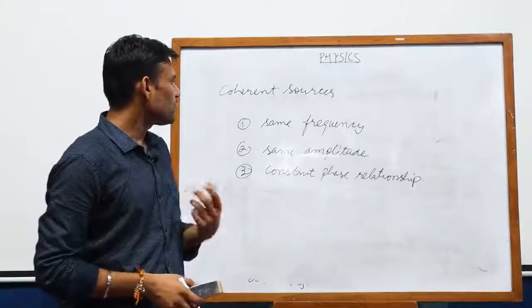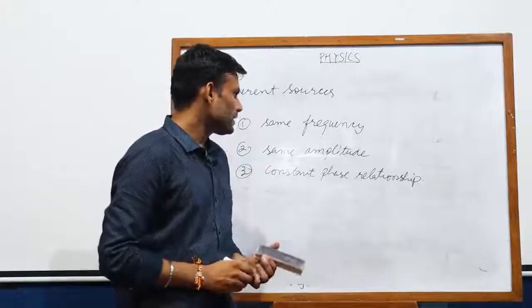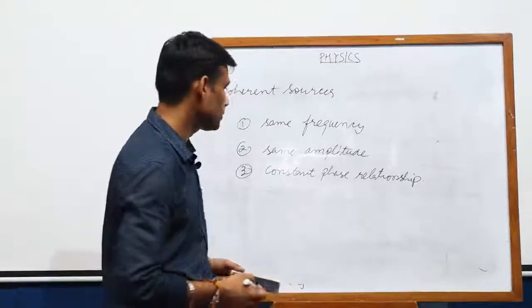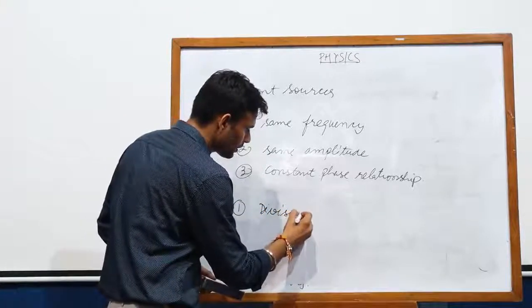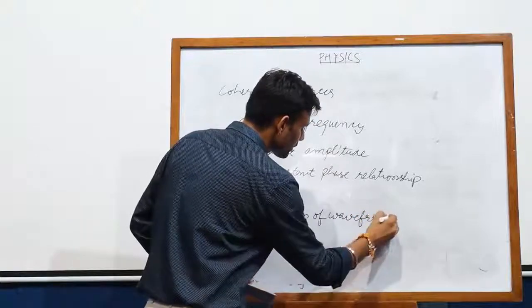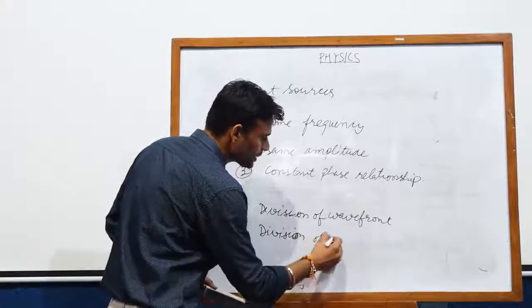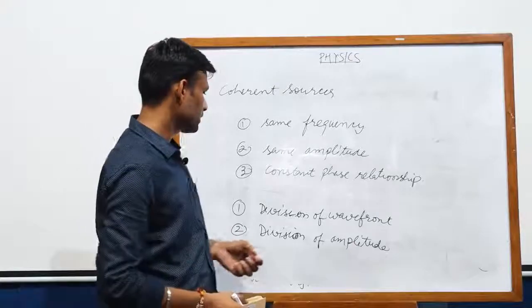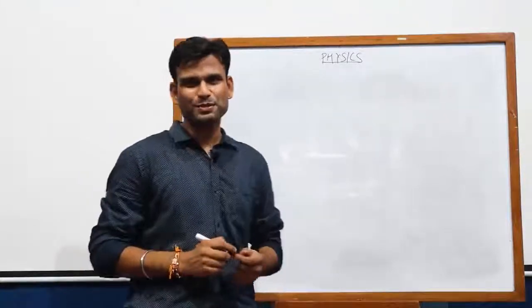In general, we do not have two different sources which are coherent, so we have to produce them artificially. There are two methods of production of coherent sources which we will study later: number one is division of wavefront, and the other is division of amplitude. We will discuss two or three experiments related to each method. Now we come to the very famous experiment — Young's Double Slit Experiment.